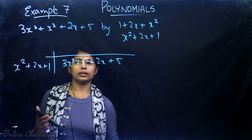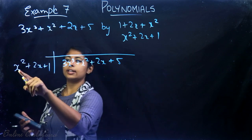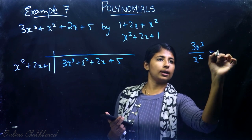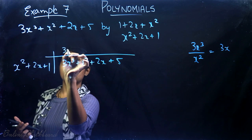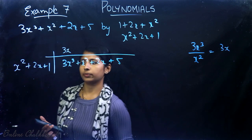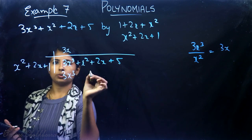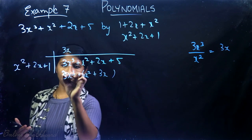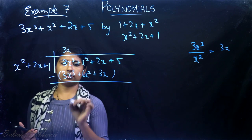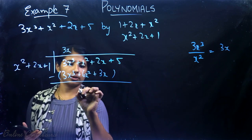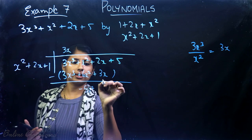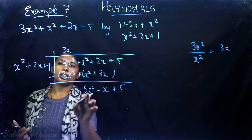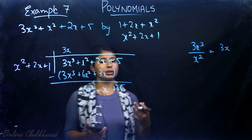Divide the highest degree term of the dividend by the highest degree term of the divisor: 3x³ divided by x² gives 3x. Multiply 3x by each term: 3x · x² = 3x³, and 3x · 2x = 6x², and 3x · 1 = 3x. Subtracting: 3x³ − 3x³ = 0, x² − 6x² = −5x², and 2x − 3x = −x, with +5 remaining. Since degree of −5x² equals degree of divisor, we continue.